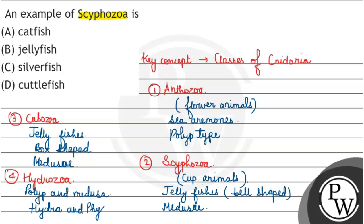Coming back to the question, what is the Scyphozoa example? Catfish is not a Scyphozoa, catfish is a fish so that option is wrong. Jellyfish is a Scyphozoa. Silverfish is an arthropod, cuttlefish is a mollusk. So the correct answer would be B jellyfish. Hope you understood the solution well, best of luck.